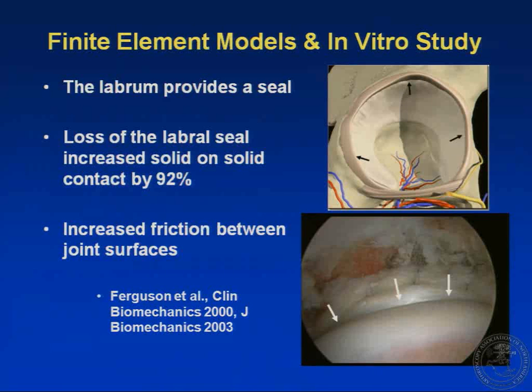There are some finite element models that have shown that the labrum primarily provides a seal. The loss of this labral seal increased solid-on-solid contact by about 92%, and this resulted in increased friction between the joint surfaces, which may predispose to premature degenerative changes.